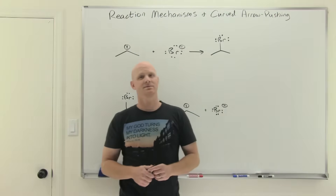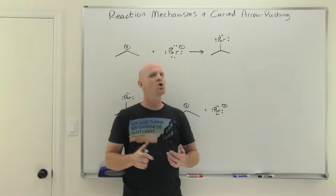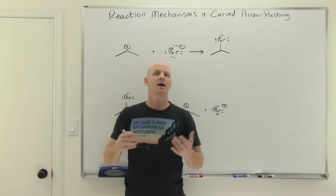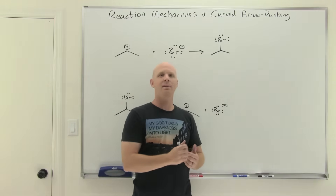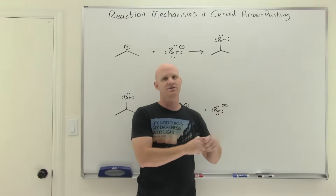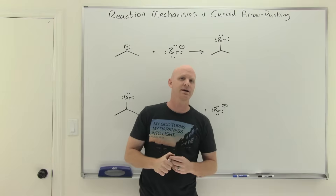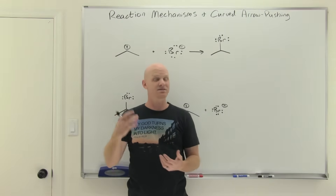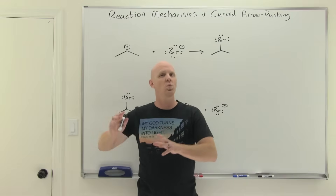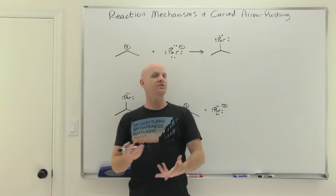So, mechanisms are just a big sequence of steps where we show all the bonds being broken and all the bonds being formed, in the order in which they happen, converting reactants into products. It turns out there are four very common mechanism steps — not an exhaustive list, but the four most common that come up time and again. Then we'll do one that's kind of stand-alone from those four, one of the less common types.